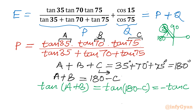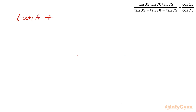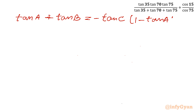Now applying the tan(A plus B) formula: tan A plus tan B, divided by 1 minus tan A tan B, equals minus tan C on the right-hand side. Cross-multiplying gives tan A plus tan B equals minus tan C times (1 minus tan A tan B).